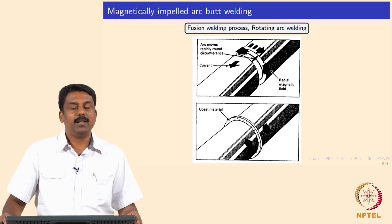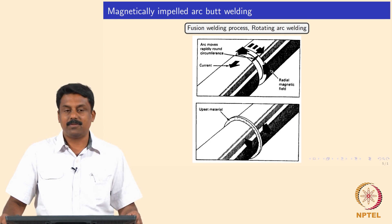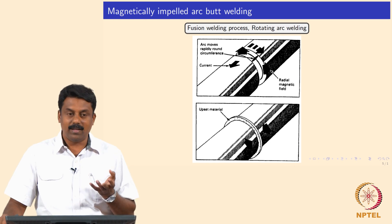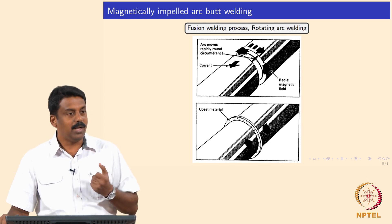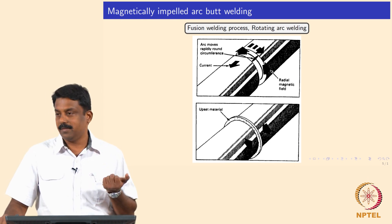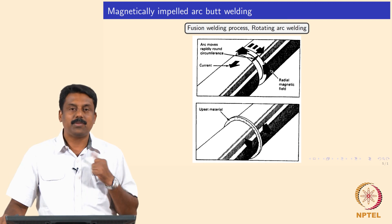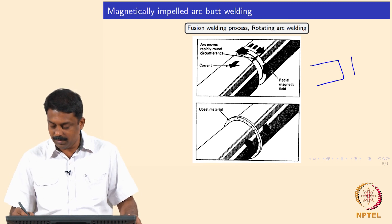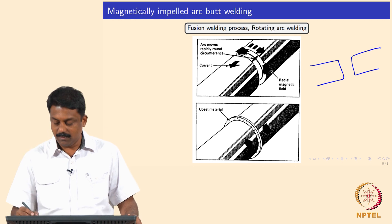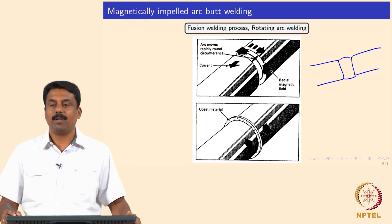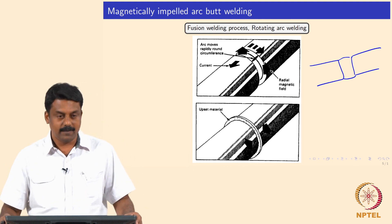In flash butt welding, when you strike an arc, the characteristic of the electron path is that electrons will always try to travel at the surface - the least resistance path. So when you strike an arc, for example in a material, the arc will be struck only from the surface because that is the path electrons would always take.